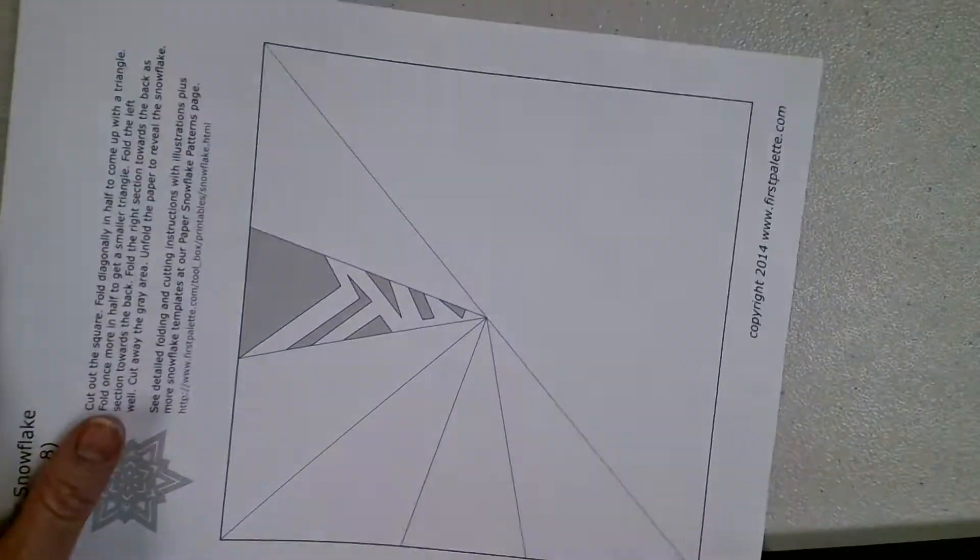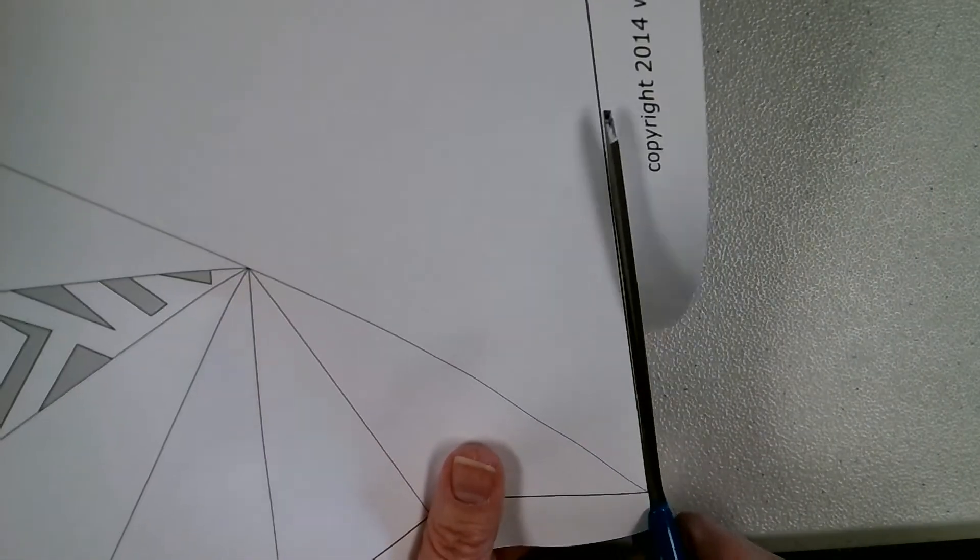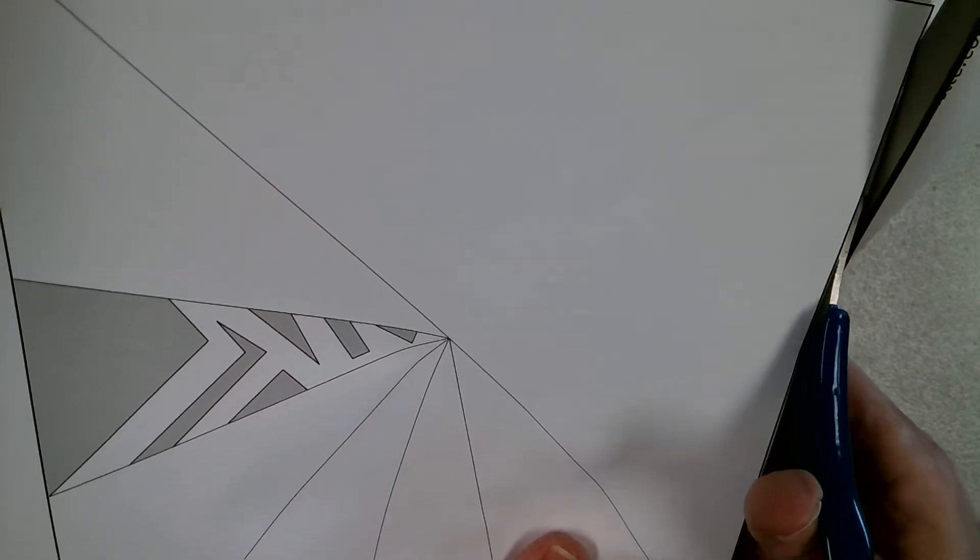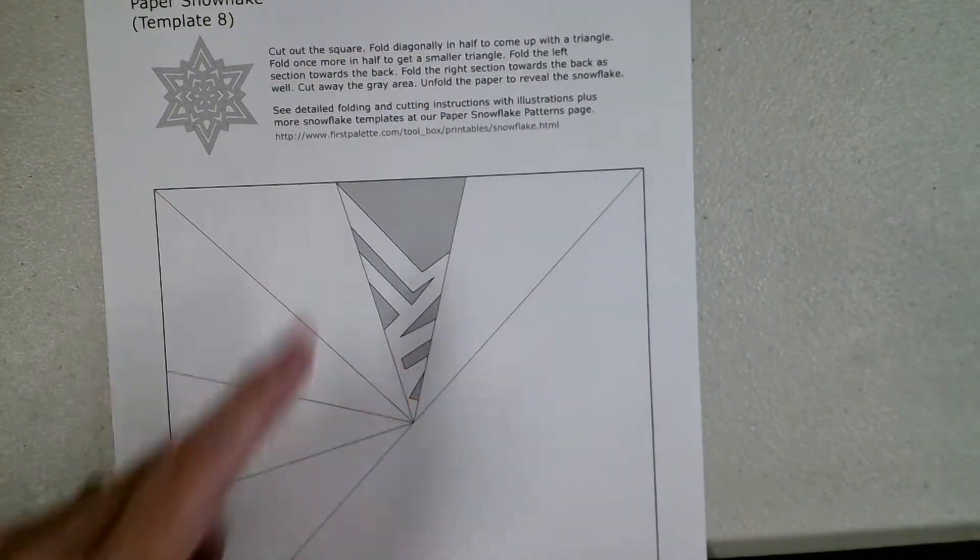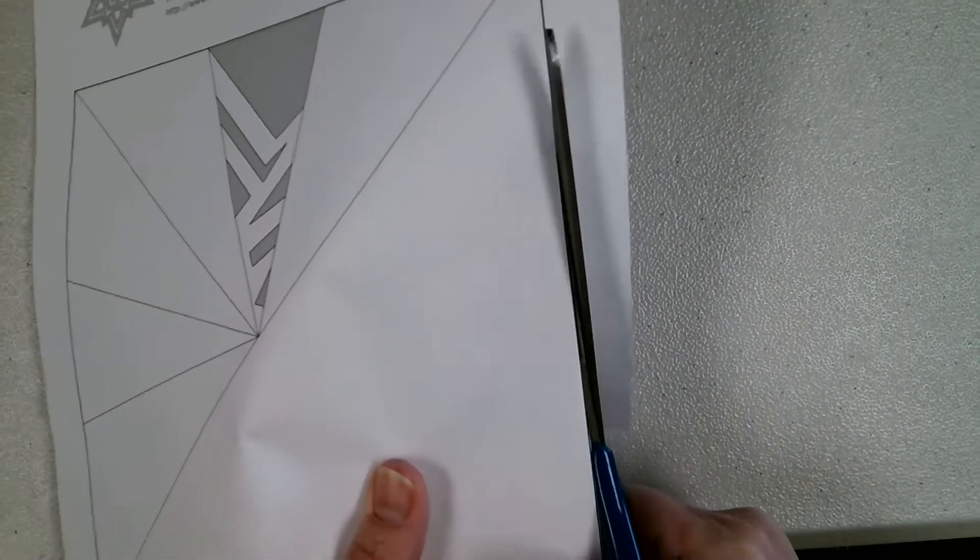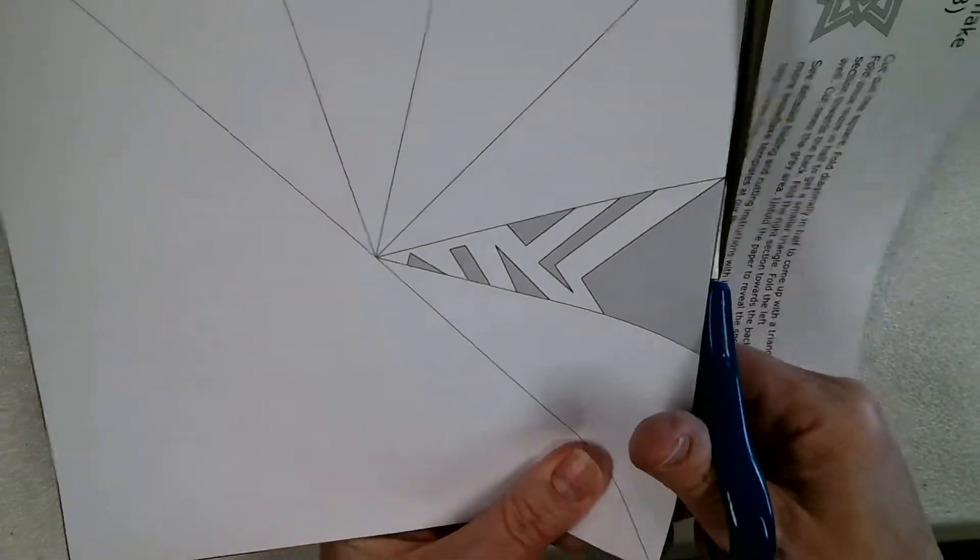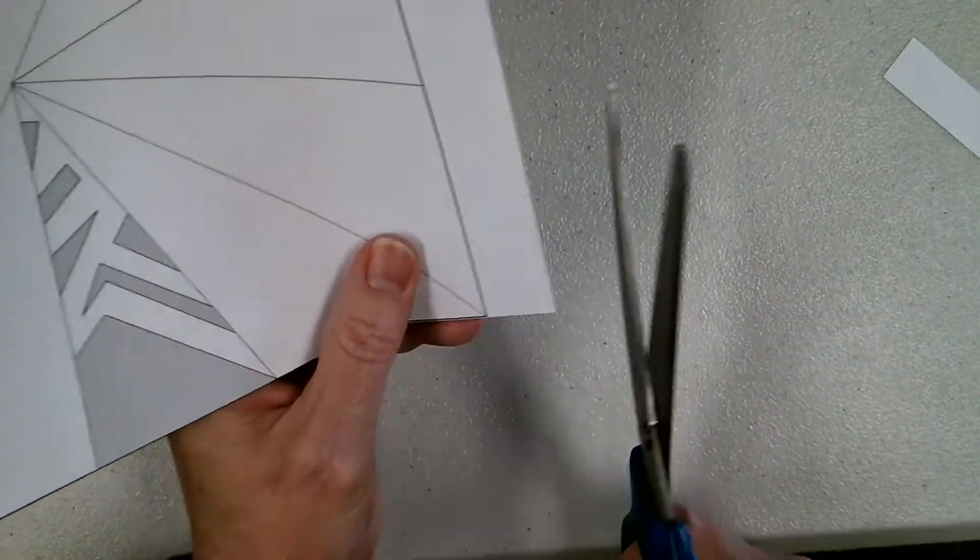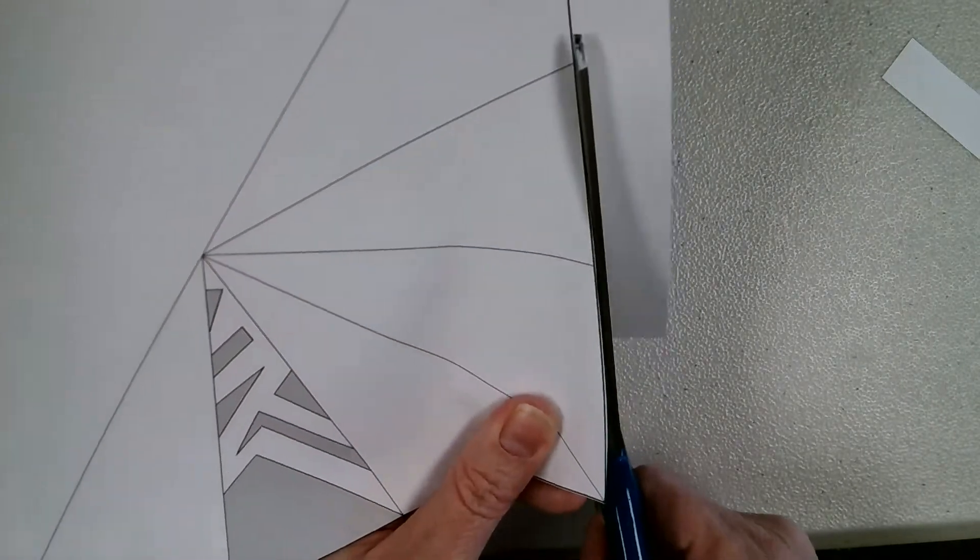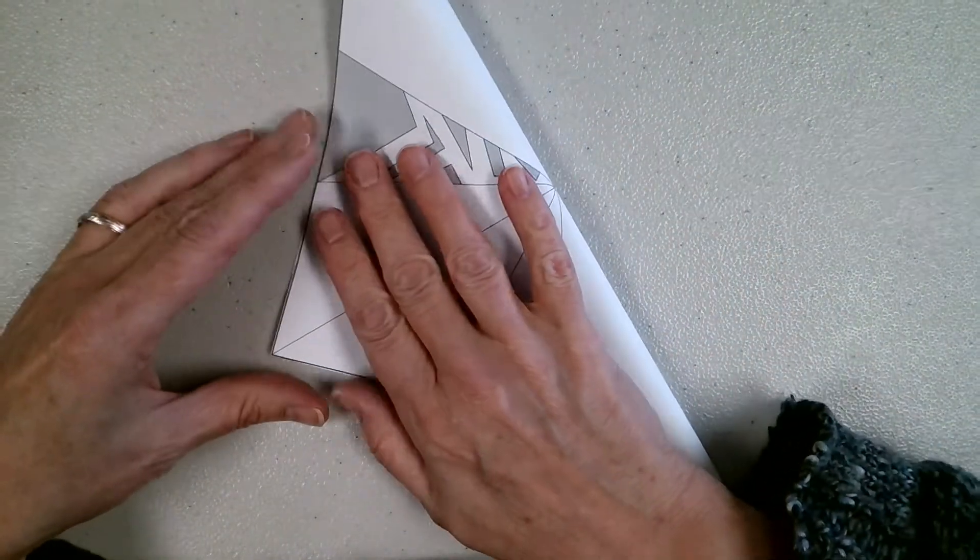Now the paper snowflake. All right, here we go. So first thing you have to do is cut it out. And the instructions are right there. We're going to just do it. Now you may not have this exact same snowflake because there were, I think, 11 different kinds of snowflakes that we had in the kits. So you got whatever you got.